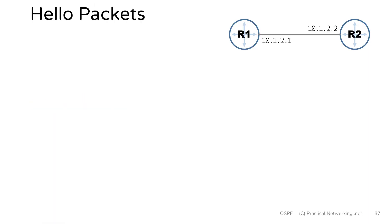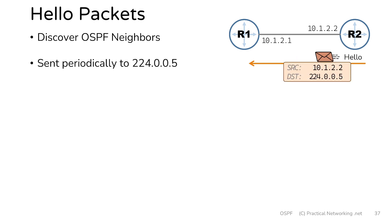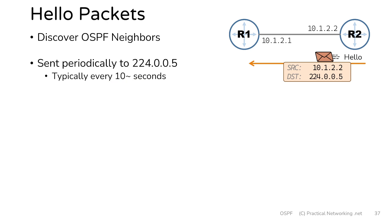As we mentioned in a previous lesson, hello packets are sent by every OSPF router for the purpose of discovering other OSPF neighbors. These hello packets are sent periodically to the multicast address 224.0.0.5, which will reach any OSPF router. By default, for the most common network types, these hello packets are sent out every 10 seconds, but there are other network types with different defaults, and you can configure any hello interval that you like.